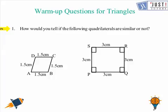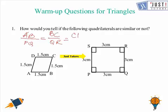Let's start with sides. Here we can see that AB over PQ is same as BC over QR equals to CD over RS and DA over SP, and they all equal to 1.5 over 3 or 1 over 2.